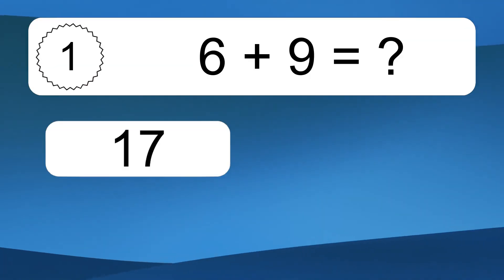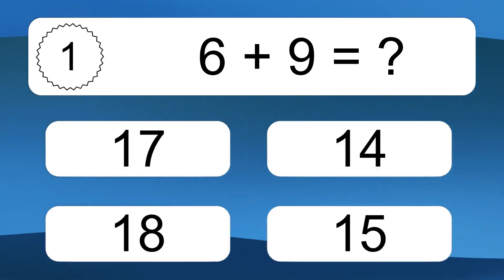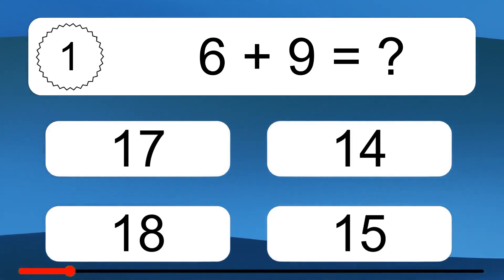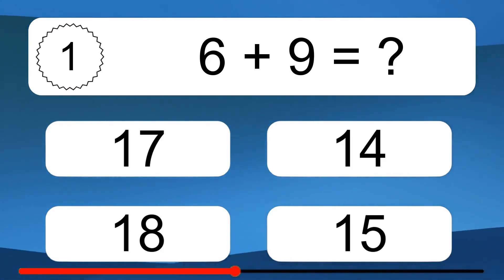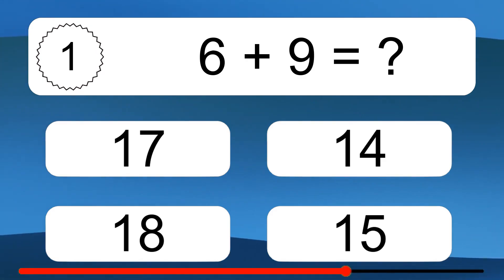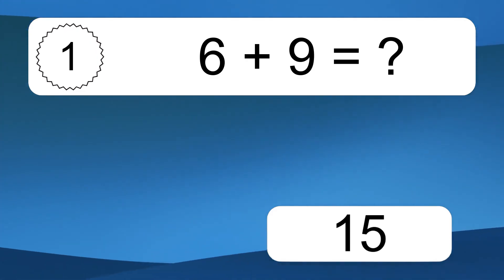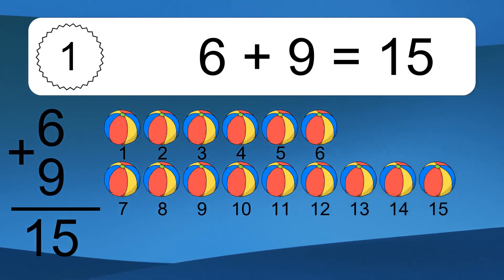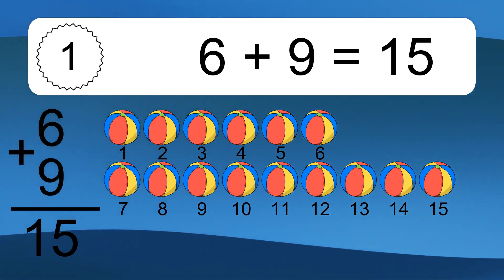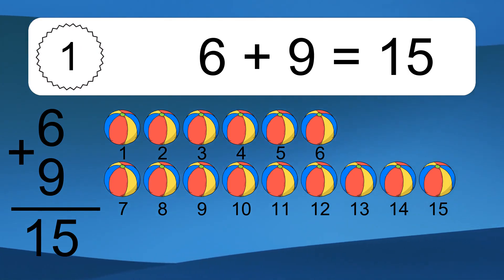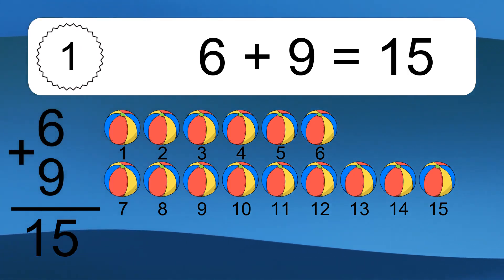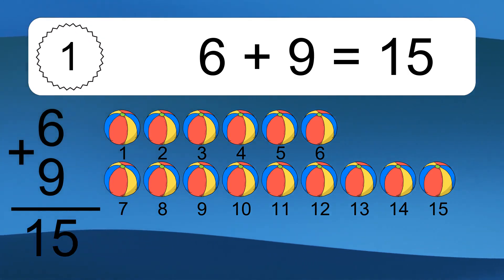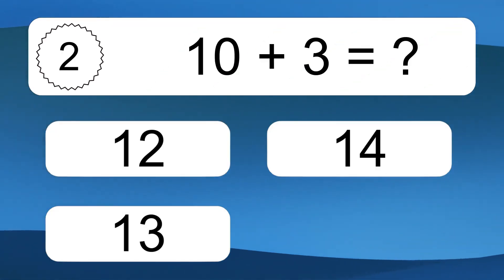Six plus nine equals what? Six plus nine equals fifteen. Let's count it: one, two, three, four, five, six, seven, eight, nine, ten, eleven, twelve, thirteen, fourteen, fifteen.